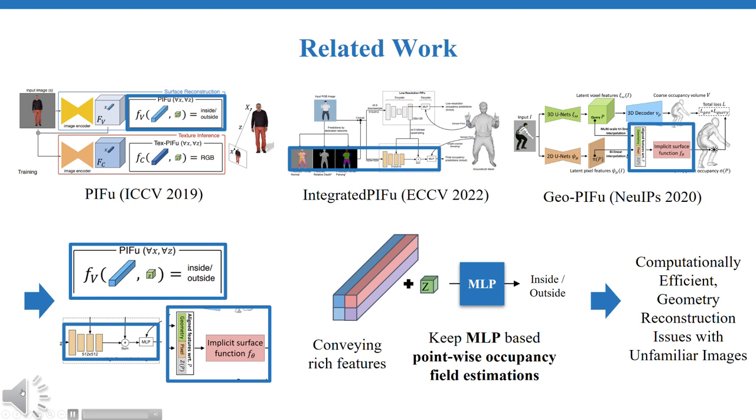While many recent studies have also aimed to tackle this issue, most of them concentrate on conveying rich features while maintaining PIFu's point-wise occupancy estimation strategy built on the MLP. Although this MLP-based occupancy network is computationally efficient, it heavily depends on image features without considering the 3D distribution.